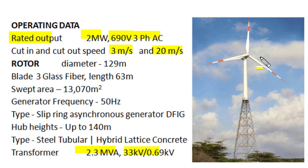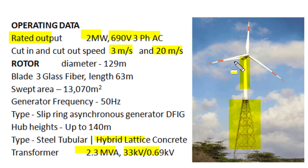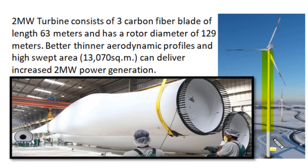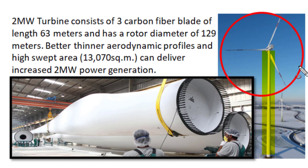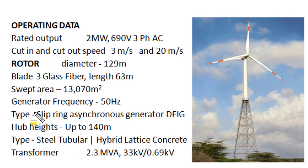Between 10 and 20 meters per second wind velocities, this turbine can produce its rated output. It has a hybrid lattice tower structure — at the ground position it is a lattice steel structure, and at the top position it is a steel tubular structure — with a total overall height of 140 meters, though a complete steel tubular design is also possible. This 2-megawatt wind turbine has 3 carbon fiber blades of length 63 meters. During rotation, the rotor blade diameter becomes 129 meters and the total sweep area becomes 13,000 square meters. The thinner and better aerodynamic airfoil profile of these blades delivers 2 megawatts of power when the rotor rotates at wind speeds of 10 to 20 meters per second.